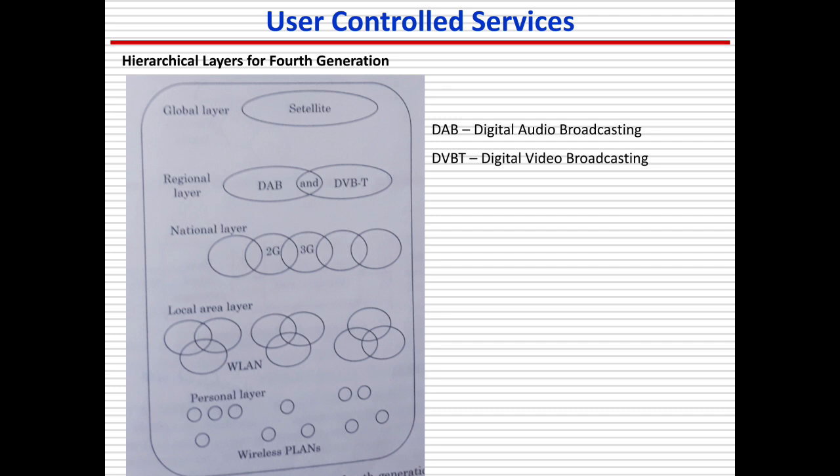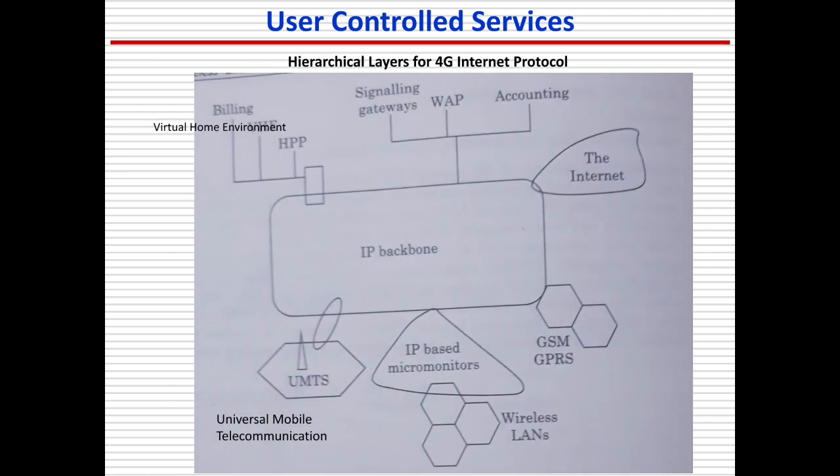The national layer includes 2G and 3G. There is a local area network layer and a wireless local area network layer. There is also a personal layer. This is the hierarchical layer structure of the fourth generation system.